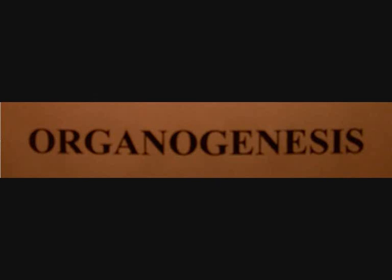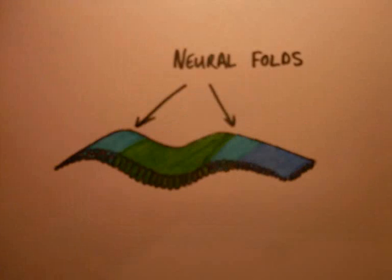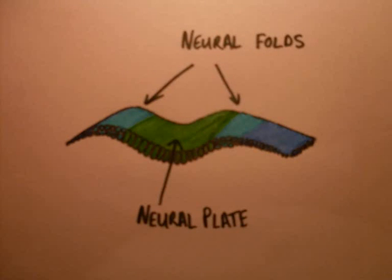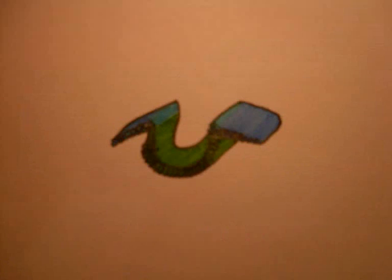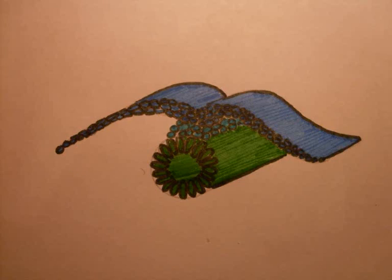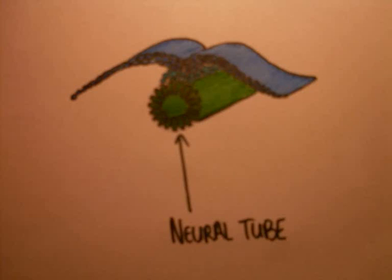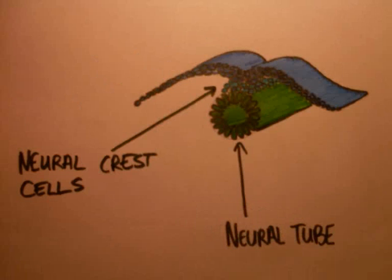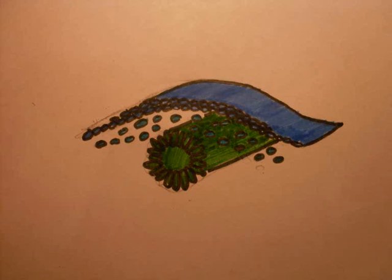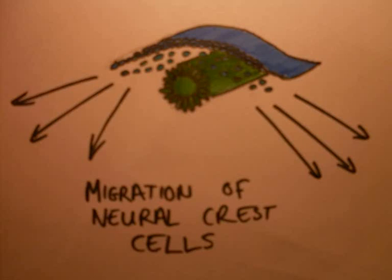The next process of organogenesis can now take place. Two neural folds form in the ectodermal tissue, giving rise to the neural plate. The folds are pinched together until they meet and seal as the neural tube, just above the notochord. The neural crest cells migrate away from this structure and give rise to structures like the peripheral nervous system and the skull bones. The neural tube will become the central nervous system.